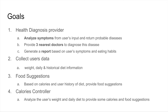Second, we collect user data like weight and daily and historical diet information. Third, we do food suggestions — for example, the user can enter the calories they want to consume and we provide food suggestions. Fourth is a calories controller: based on the user's current weight and diet information, we proactively suggest food they can eat to control their calorie intake.